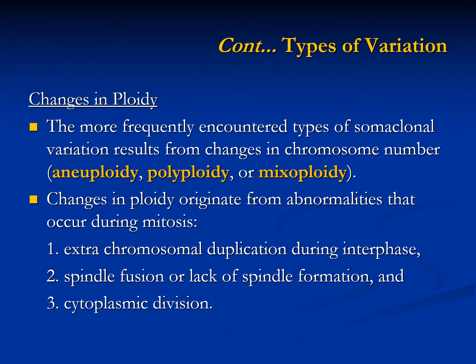One of the more frequently encountered types of somaclonal variation results from changes in chromosome number — that is, aneuploidy, polyploidy, or mixoploidy. Changes in ploidy originate from abnormalities that occur during mitosis, for example extrachromosomal duplication during interphase, spindle fusion, lack of spindle formation, and cytoplasmic division.